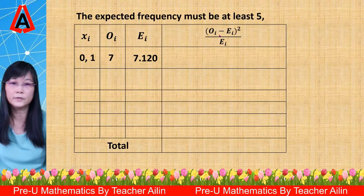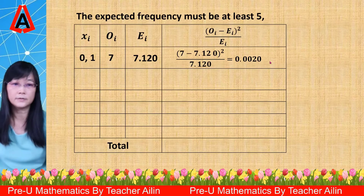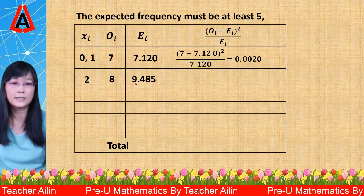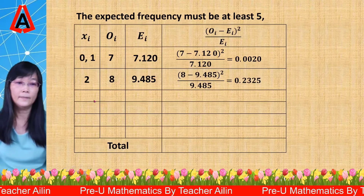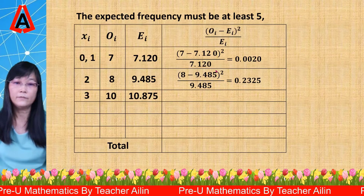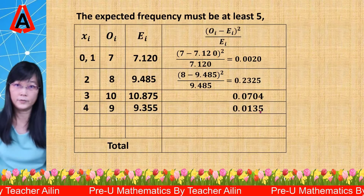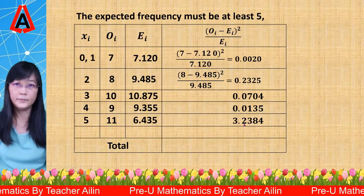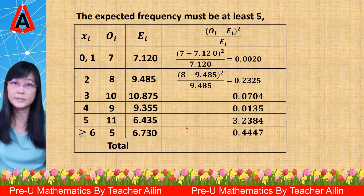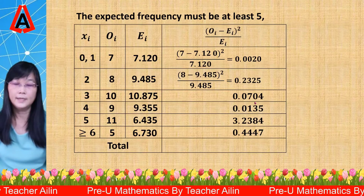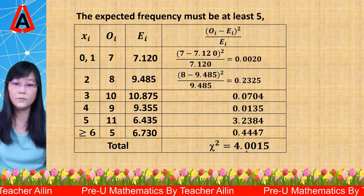Now we substitute O and E into the formula (O minus E) squared divided by E for each class. For the combined class (x equals 0 and 1), we get 0.0020. For x equals 2, O is 8 and E is 9.485, giving 0.2325. For x equals 3, we get 0.0704. For x equals 4, we get 0.0135. For x equals 5, we get 3.2384. For the last class (x greater than or equal to 6), we get 0.4447. Summing all these values, the chi-square statistic is 4.0015.